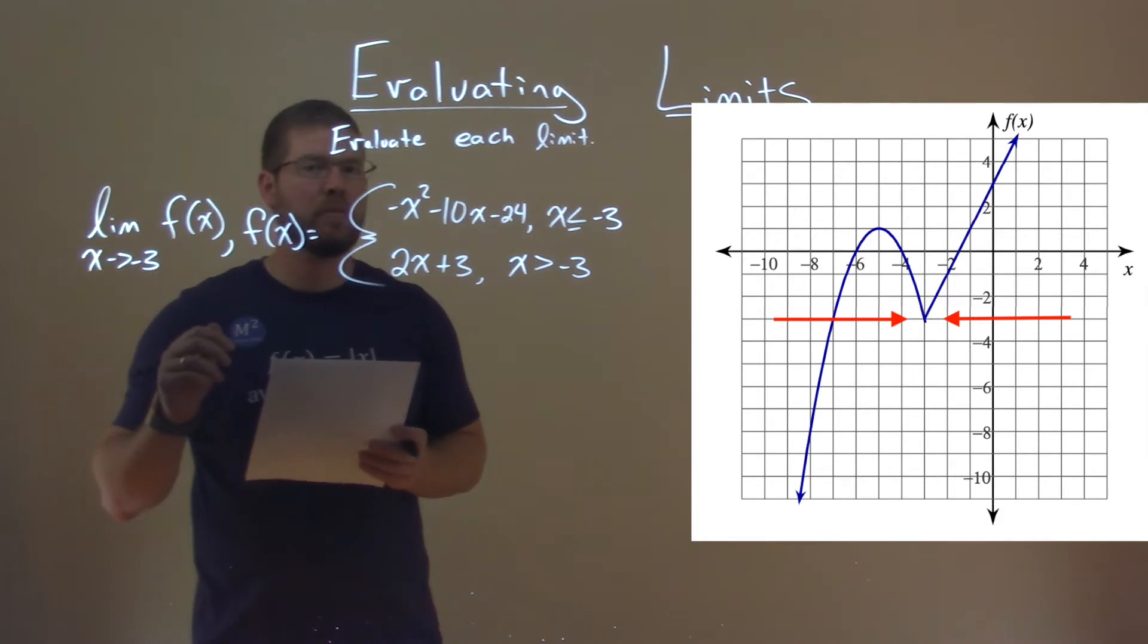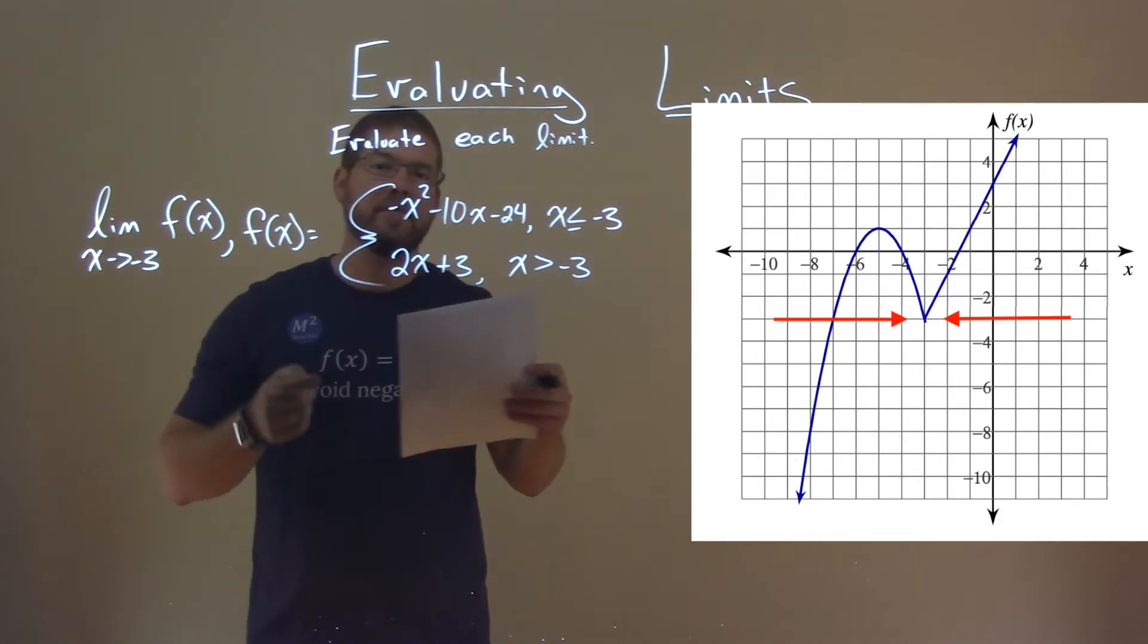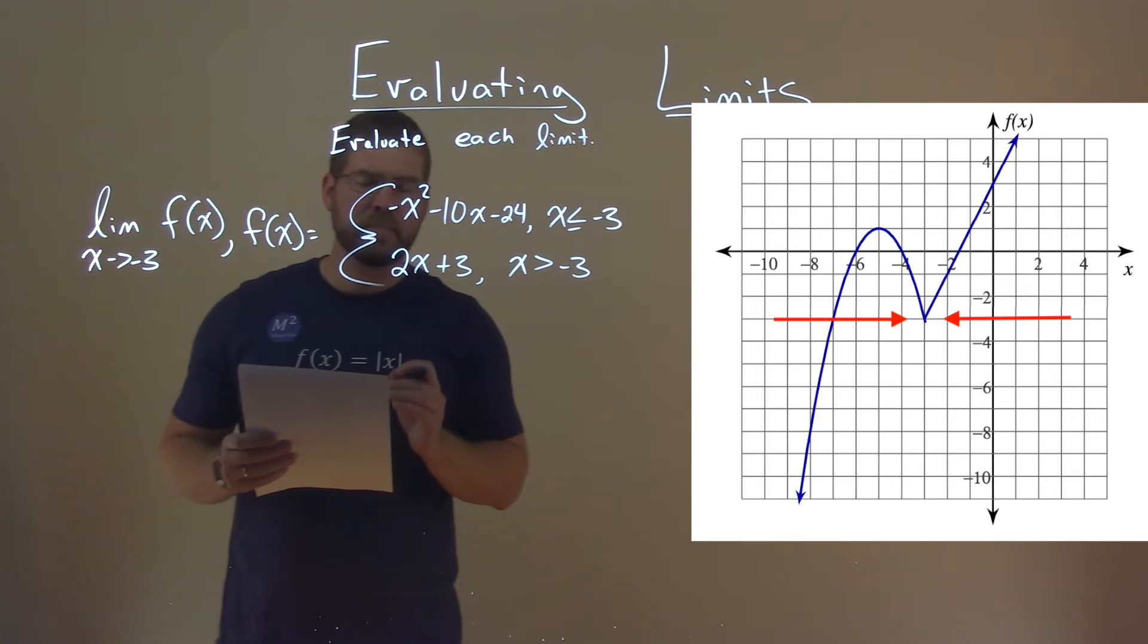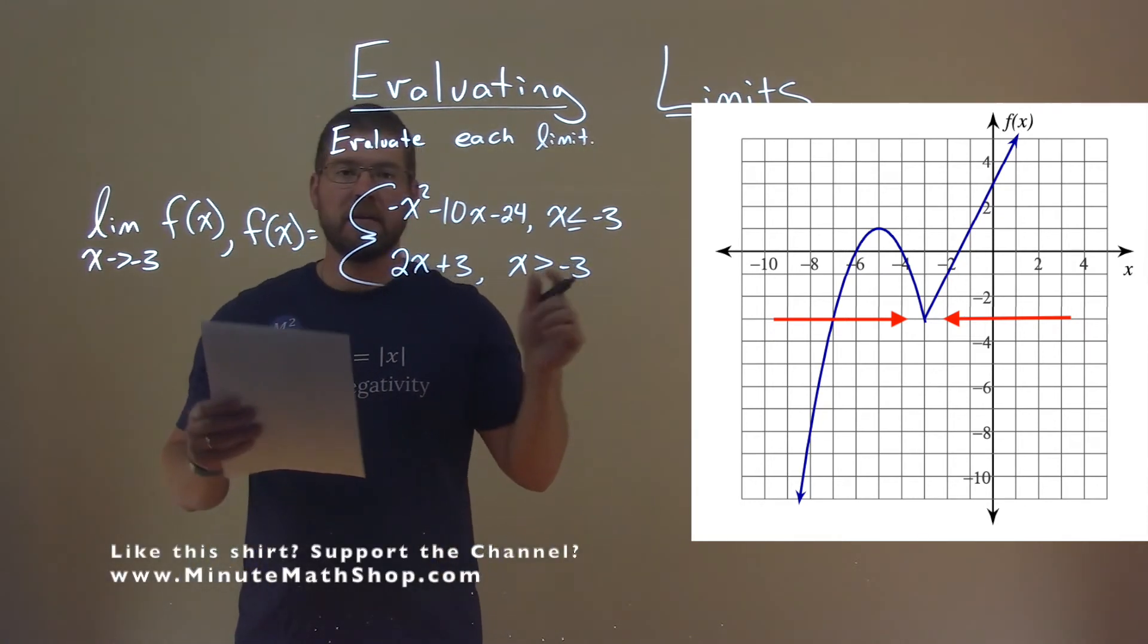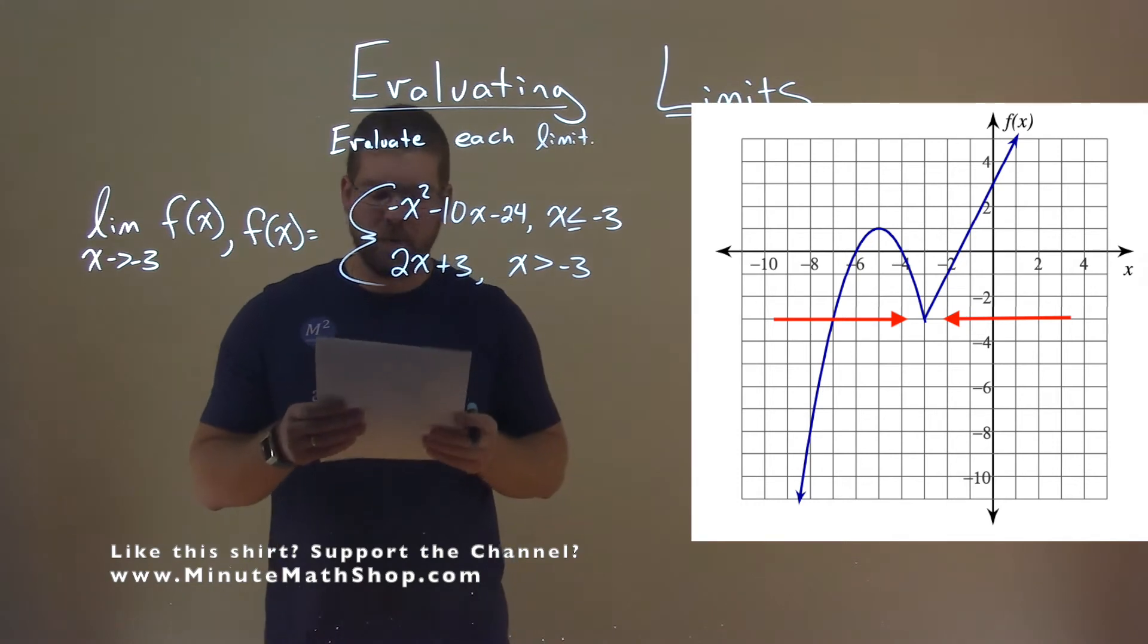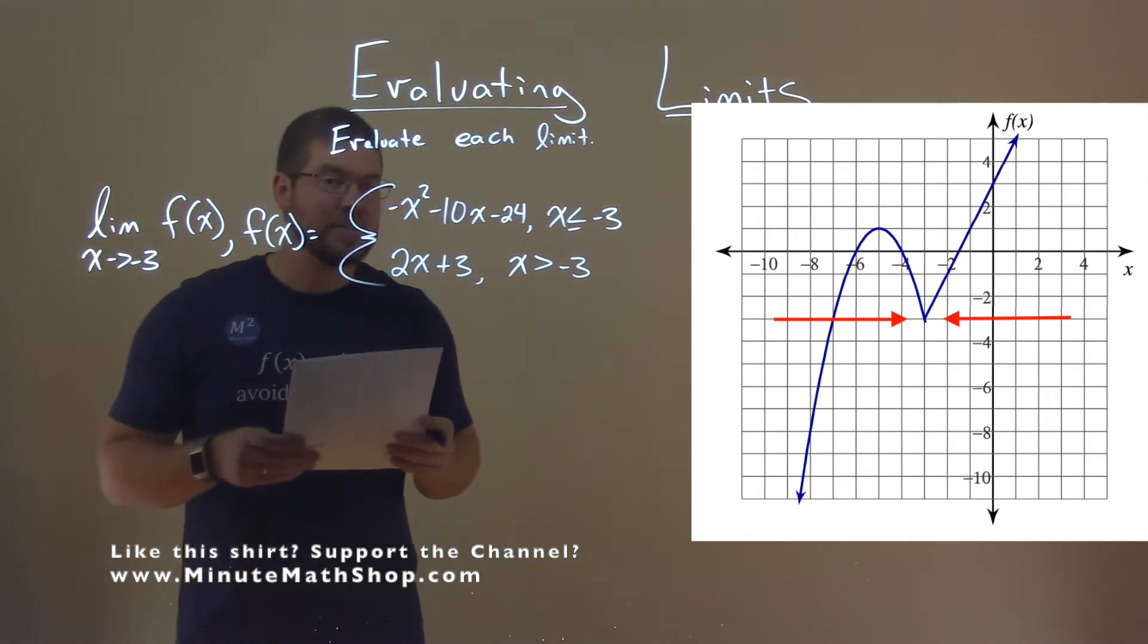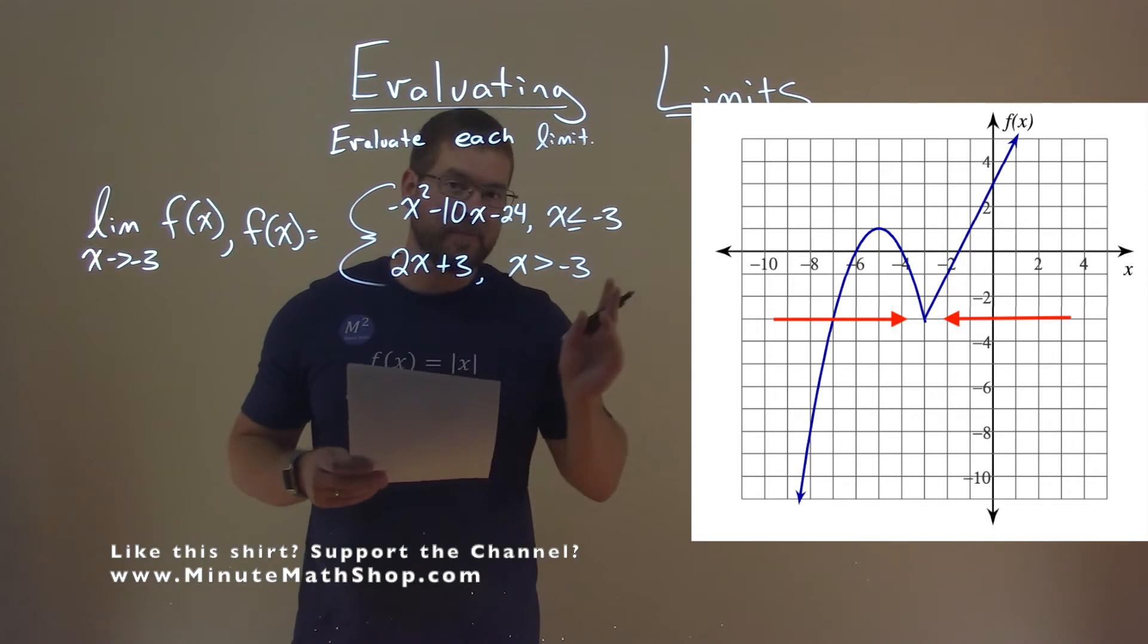the limit as x approaches negative 3, it has to approach both the left and right hand side together. Well, they've both reached the same point there, the y value at negative 3, they're both approaching when x is negative 3 to the y value of actually negative 3 right there.